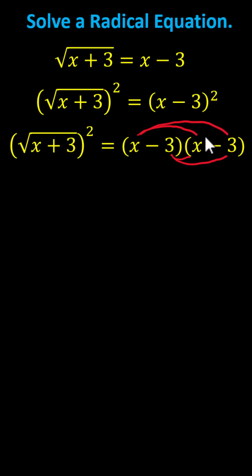We have x times x, which is x squared, and then minus 3x minus 3x plus 9, giving us x squared minus 6x plus 9 on the right.